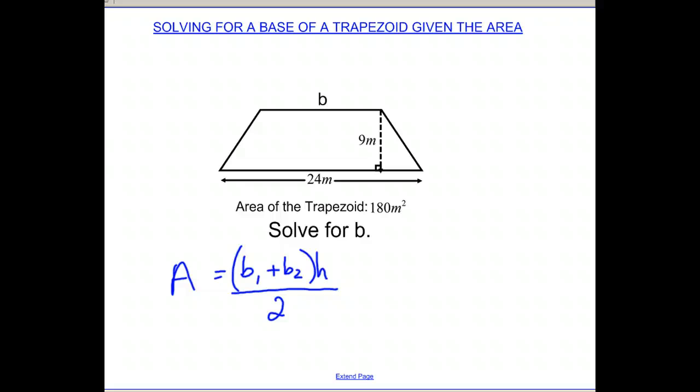So if I do this, I know my area is given to me right here. It's 180 meters squared. I have one of the bases, this base right here, 24 meters, the long base on the bottom. So I'll use that as base 1. It doesn't matter which one you use it for.